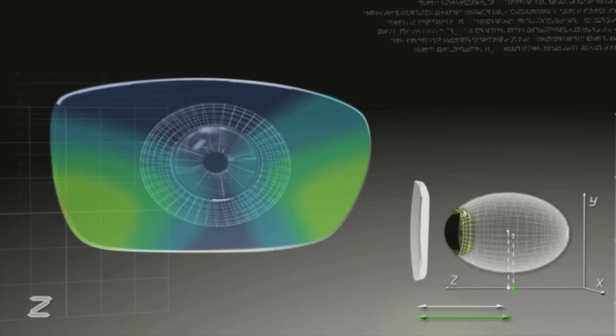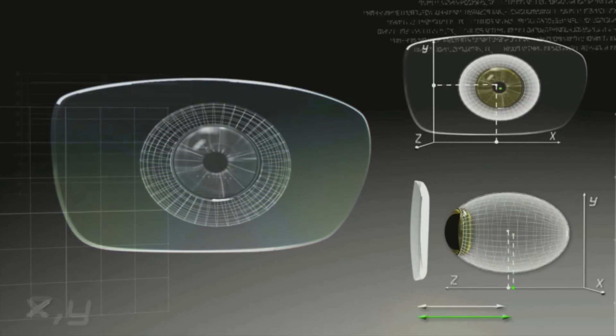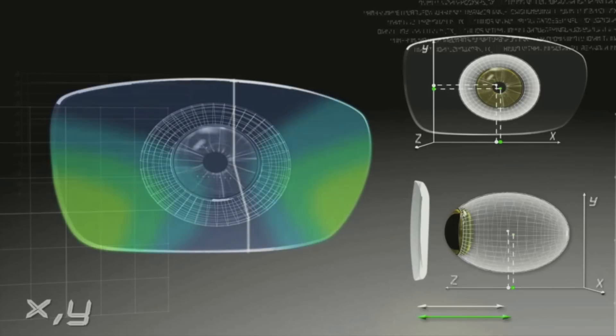Rather than applying theoretical values, eye-code lenses are uniquely manufactured using real 3D coordinates of the ERC.